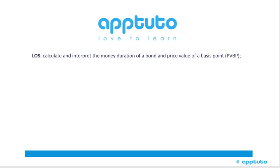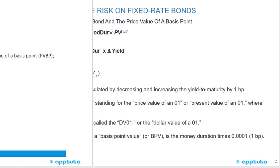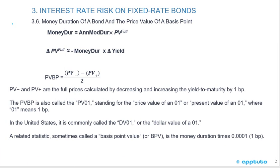This LOS covers how to calculate and interpret the money duration of a bond and the price value of a basis point, PVBP. With this learning outcome statement, we're only going to look at one slide of theory with a couple of formulas, and then jump into five practice questions. That's the best way to get on top of the calculations.